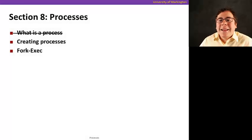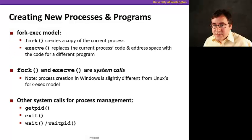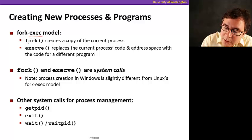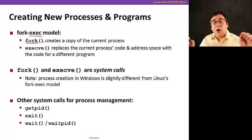Now that we know what a process is, let's see how we create processes. We're going to use a model called the fork-exec model. Fork creates a copy of the current process, and execv replaces the current process code and address space with the code for a different program.